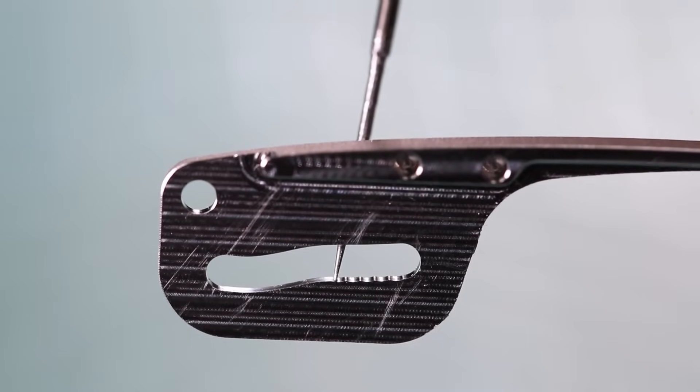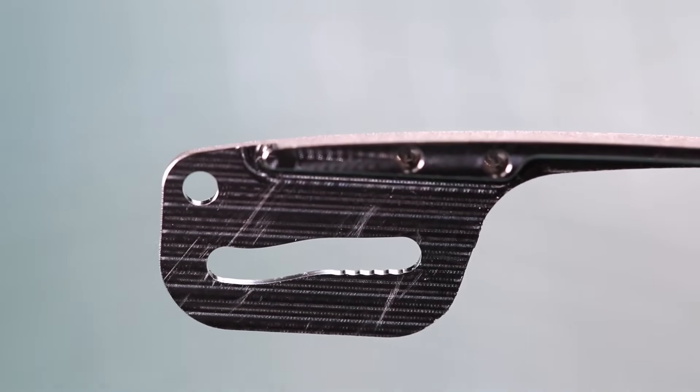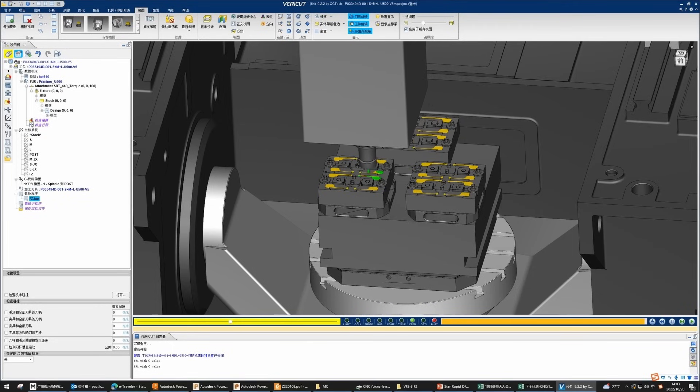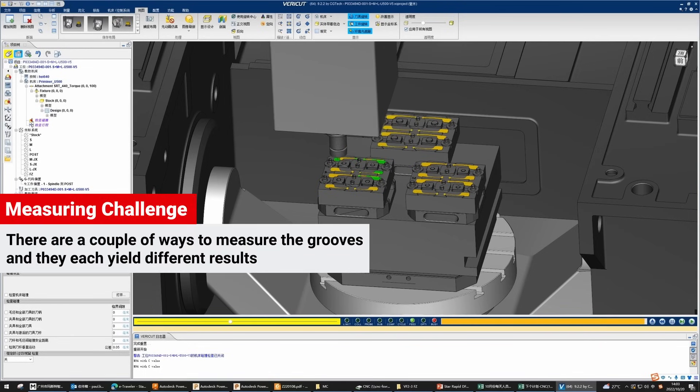As it happens, these are also critical to function, but we didn't know that. We also uncovered some subtle differences between how StarRapid and our client were measuring these features. There are a couple of ways to do it, and they each yield different results.